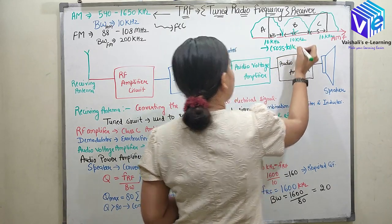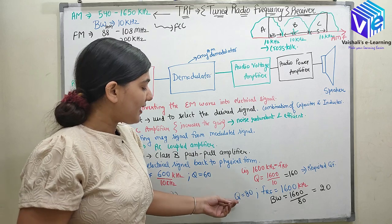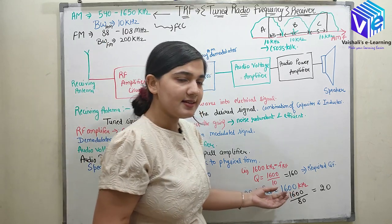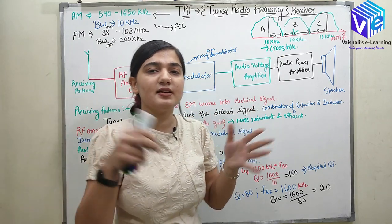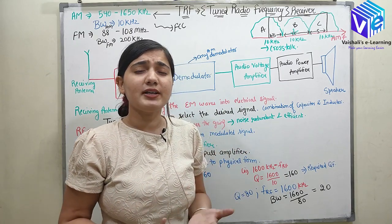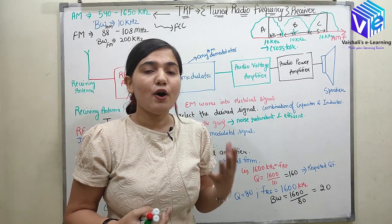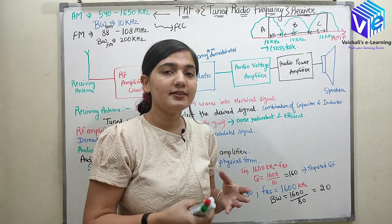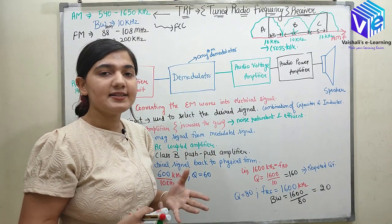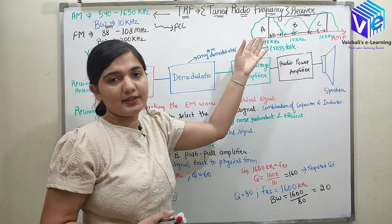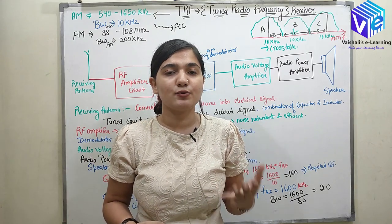This is called cross talk — cross talk happens when receiving a higher frequency signal with a lower quality factor receiver. When I have a higher frequency signal and a low quality receiver, I will always get cross talk. Other signals are also coming and being received by the receiver. This means there is a selectivity issue — the ability of the receiver to detect only the desired signal is compromised.